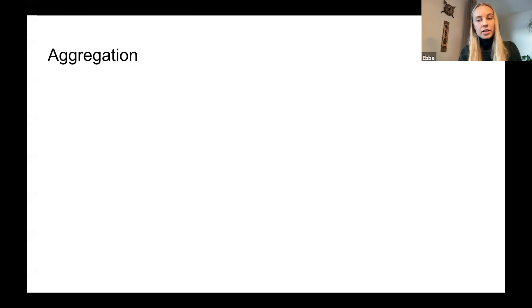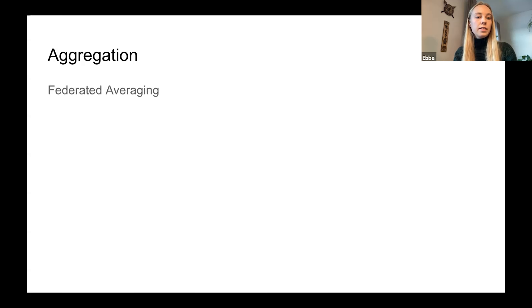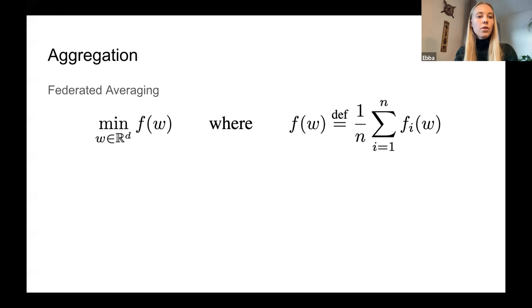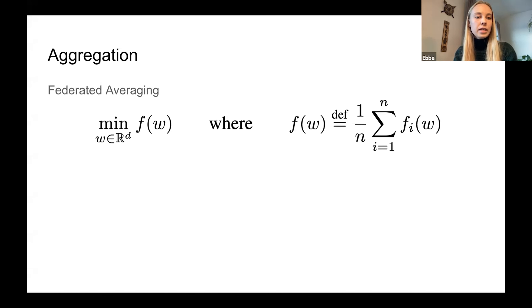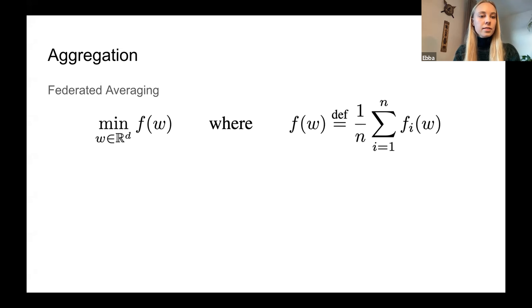I'd like to mention a little about the aggregation of these models. The most common way to do it is by federated averaging. This corresponds to minimizing the average of the objectives of all the local models. In this equation, the local loss function of client i is represented by fi, depending on the weights w. We get the global objective f of w by computing the average over the n clients. Averaging can be considered a relatively simple approach that actually does work pretty well for many scenarios, but in others it might be a bit too naive — especially when the data distributions on the different clients are very different to one another.